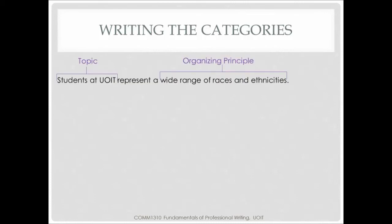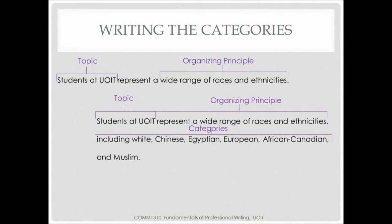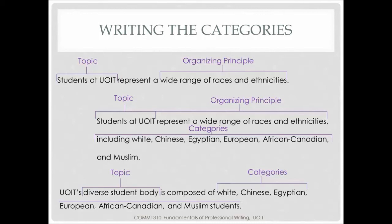The thesis statement of a classification essay usually includes the topic being classified and how it is being classified — the organizing principle. Sometimes the categories are named. For example, the topic 'students at UOIT' with the organizing principle 'a wide range of races and ethnicities' is vague. A better version provides the same topic and organizing principle but gives specific category examples. In the most sophisticated version, the topic and organizing principle are combined — for example, 'UOIT's diverse student body is composed of...' followed by a list of categories.